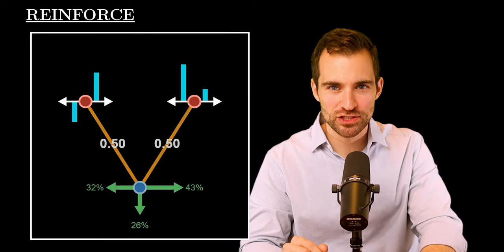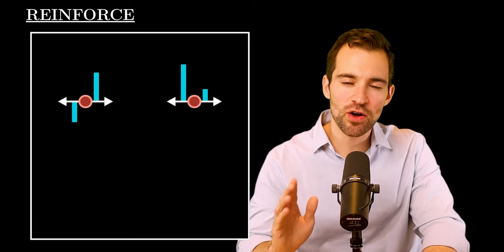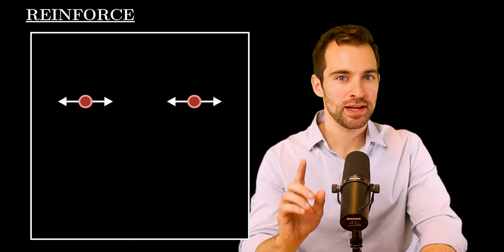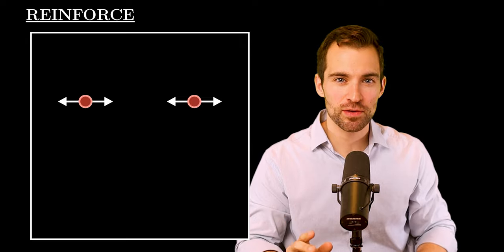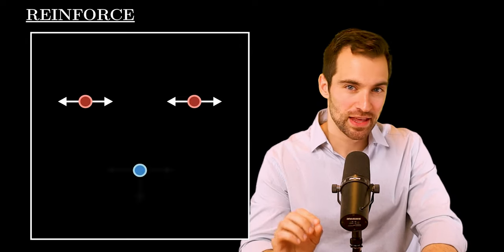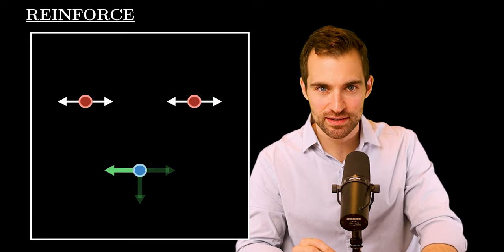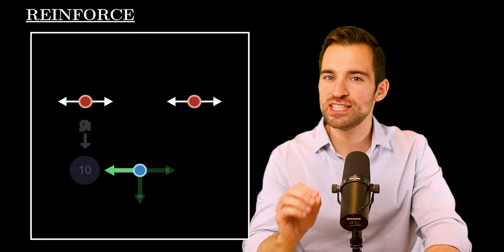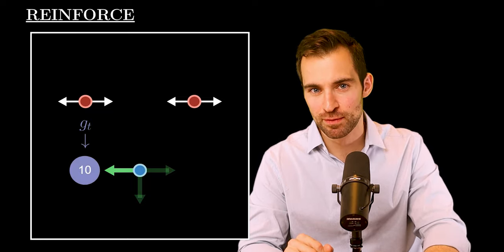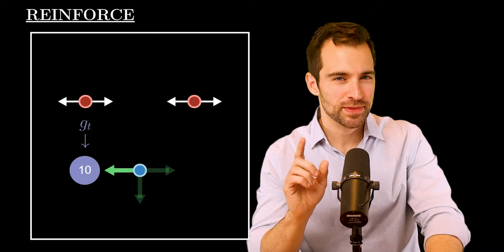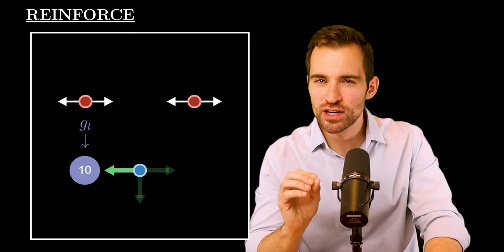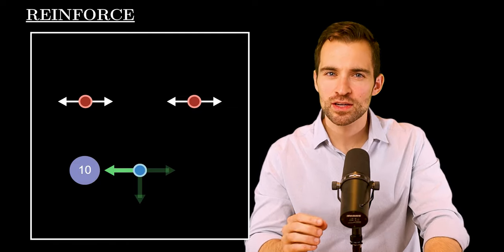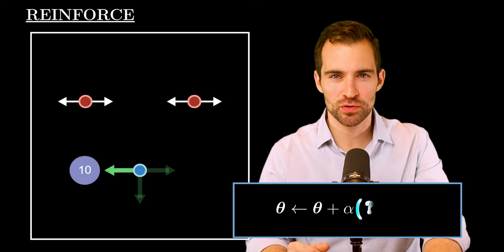All right, in this setup, I'll ask you a question. First, we initialize all thetas to zero. Now let's say that during the run of the algorithm, we run into this state, and the left action is taken. And following that, a return of 10 is realized over the remainder of the episode. All right, here's the question. Seeing this, how should we nudge our thetas? That is, what should we have as our update rule?